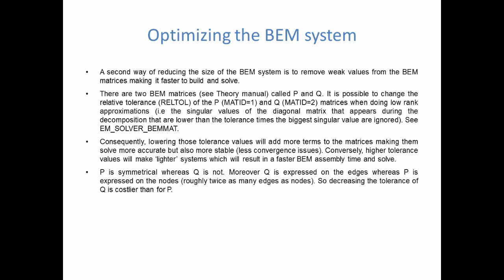There are two BEM matrices — you can check the theory manual for more details. They are called matrix P and matrix Q. It is possible to change the relative tolerance of the P and Q matrices when doing low-rank approximations; check the keyword EM_SOLVER_BM_MAT. If you lower those tolerance values, it adds more terms to the matrices — weaker terms — making the solve more accurate and also more stable, which reduces convergence issues. This may be especially interesting when you have a complex geometry for the BEM mesh where faces are very close to one another.